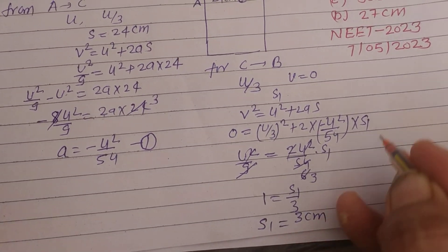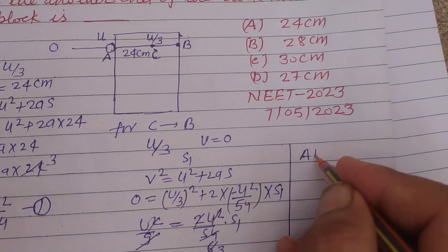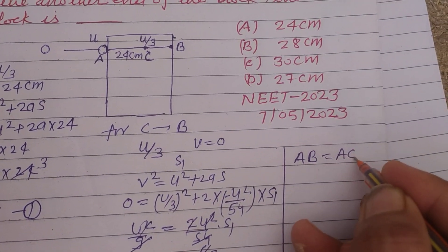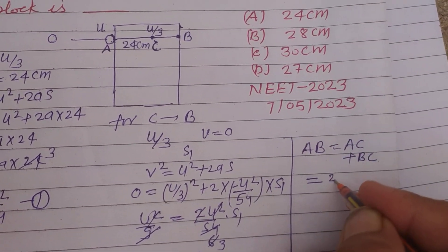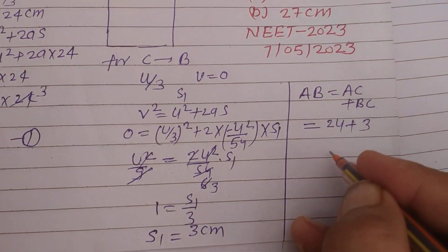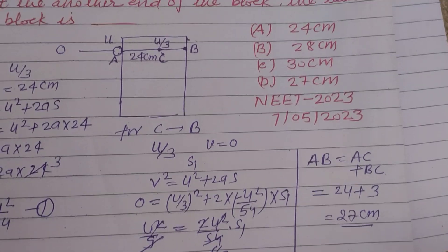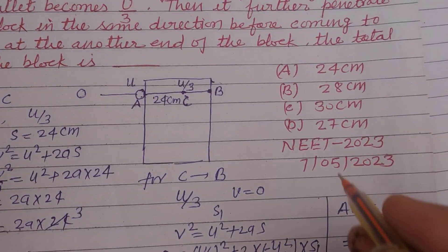equals 3 cm. So total distance covered AB equals AC plus BC. AC is 24 and BC is S1 which is 3, so 27 cm is the length of the block.